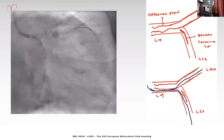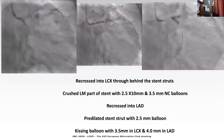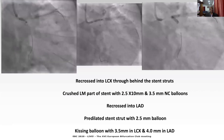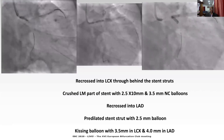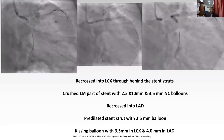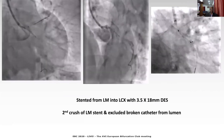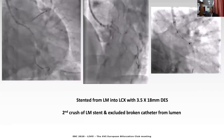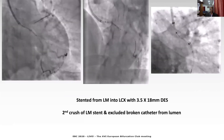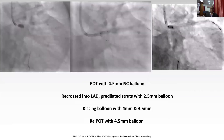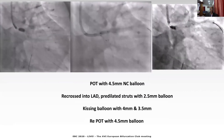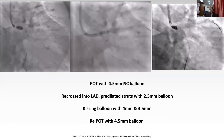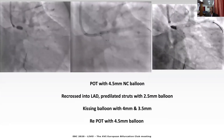Plan B was to exclude the IVUS catheter from the circulation. We enlarged the peri-stent space and crushed the left main part with a 2.5 mm and then a 3.5 mm non-compliant balloon. We recrossed into the LAD, pre-dilated the stent struts with a 2.5 mm balloon, and performed a kissing balloon with 3.5 mm in the circumflex and 4 mm in the LAD. We then placed a 3.5 x 18 mm stent from left main into the circumflex, crushing the left main part of the stent a second time and excluding the broken catheter from the lumen. Subsequently, we recrossed into the LAD and performed kissing balloon with 4 mm in the LAD and 3.5 mm in the circumflex, followed by proximal optimization with a 4.5 mm balloon.